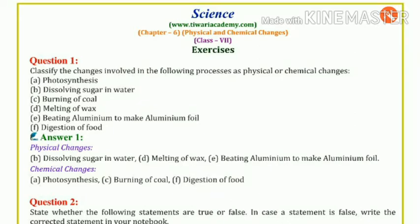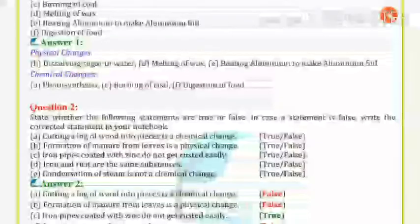Dissolving sugar in water is a physical change. Burning of coal is a chemical change. Melting of wax is a physical change. Beating aluminum to make aluminum foil is a physical change. Digestion of food is a chemical change.